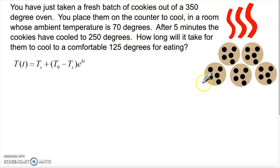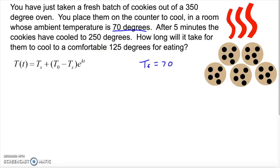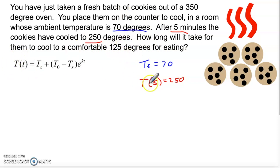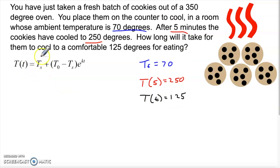Let's say we have a fresh batch of cookies that just came out of a 350-degree oven. We're going to cool them on a counter in a room whose ambient temperature is 70 degrees — that's our T sub s. After five minutes, the cookies have cooled to 250 degrees, so T(5) = 250. What we want to know is: how long will it take for the cookies to cool to a comfortable 125 degrees for eating? So T(t) = 125, and this is what we're trying to solve for — little t.